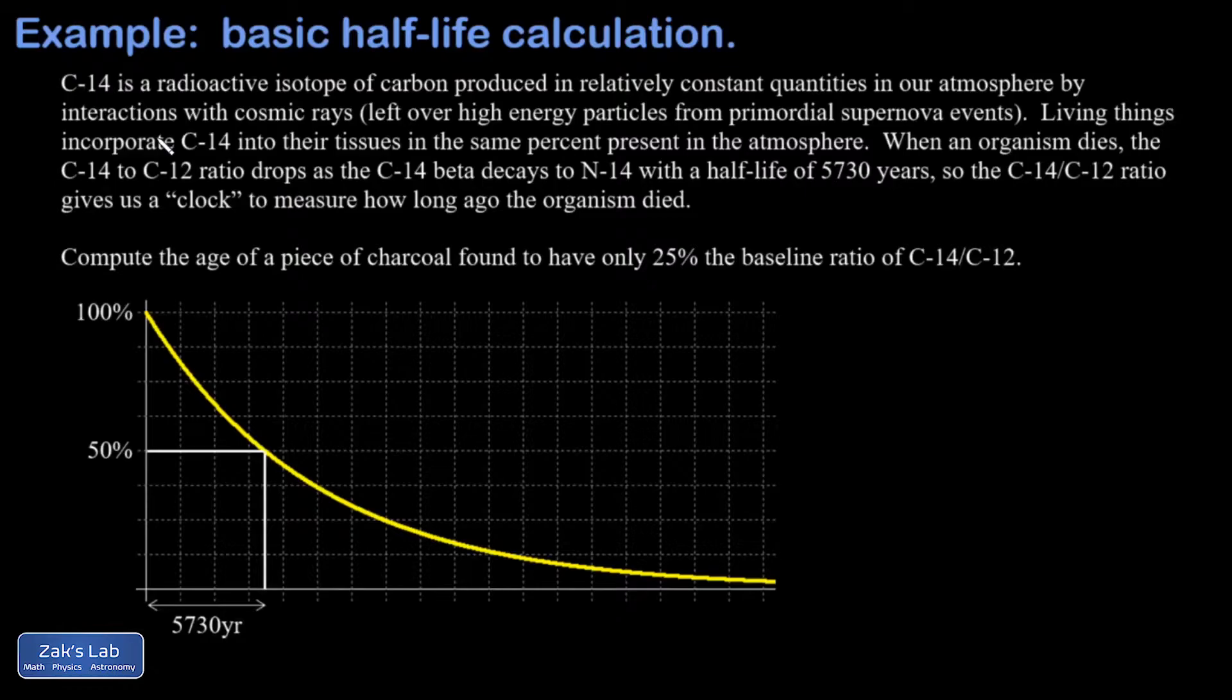The idea is that the percentage of carbon in our atmosphere in the form of carbon-14 is maintained at a pretty constant level by collisions with high energy particles called cosmic rays in the upper atmosphere. And so the carbon dioxide in the atmosphere has basically a fixed percentage of it is going to be C-14.